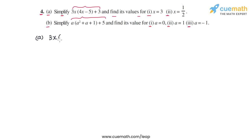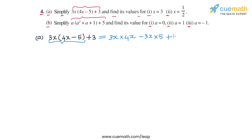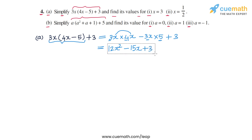The expression we have to simplify in part a is 3x times (4x minus 5) plus 3. We expand this product using the distributive law, giving us 3x into 4x minus 3x into 5 plus 3. Now 3x into 4x is 12x squared, and minus 3x into 5 is minus 15x, so the simplified form is 12x squared minus 15x plus 3.